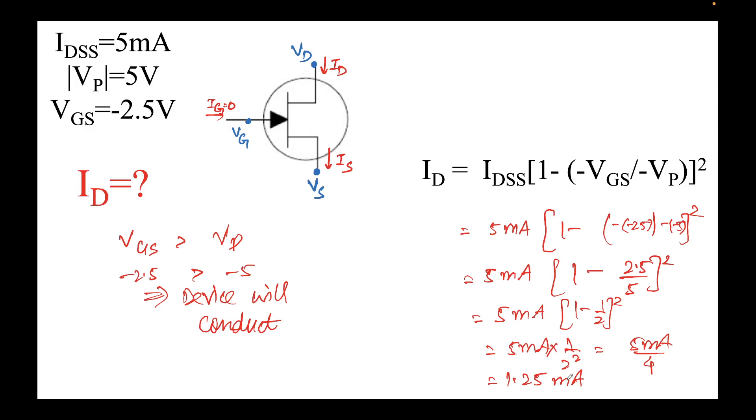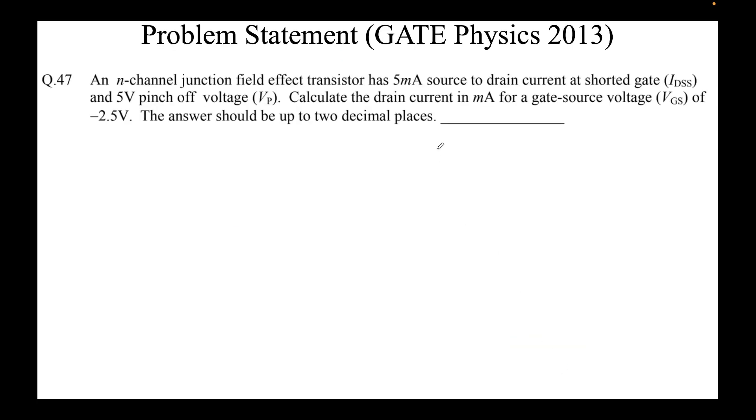There will be some current flowing, which is 1.25 milliamps. We have obtained the current here in milliamps, which was required and up to decimal places.